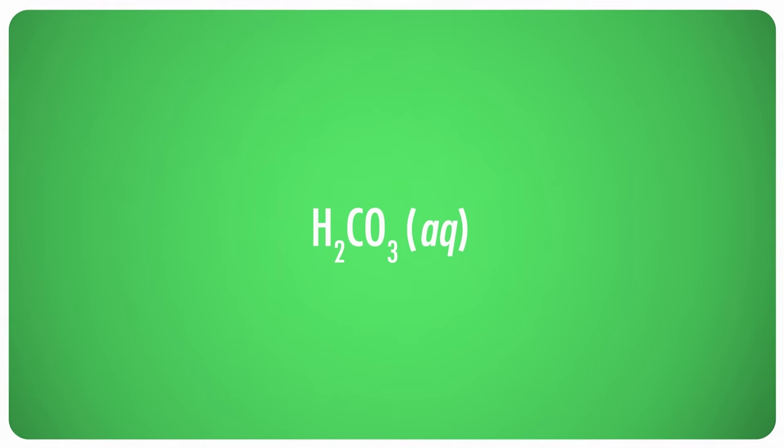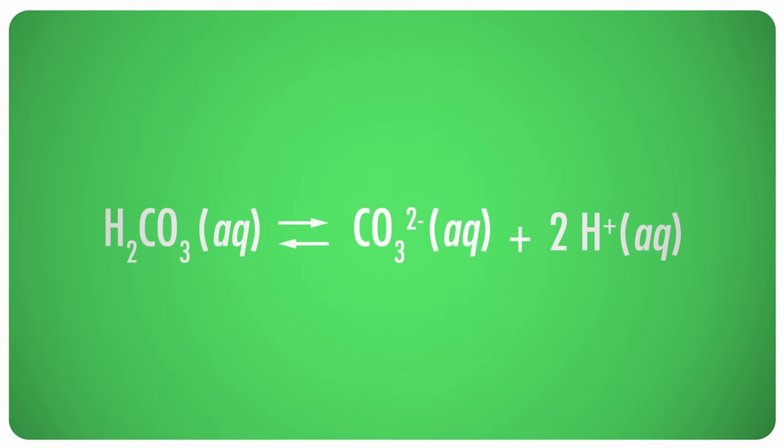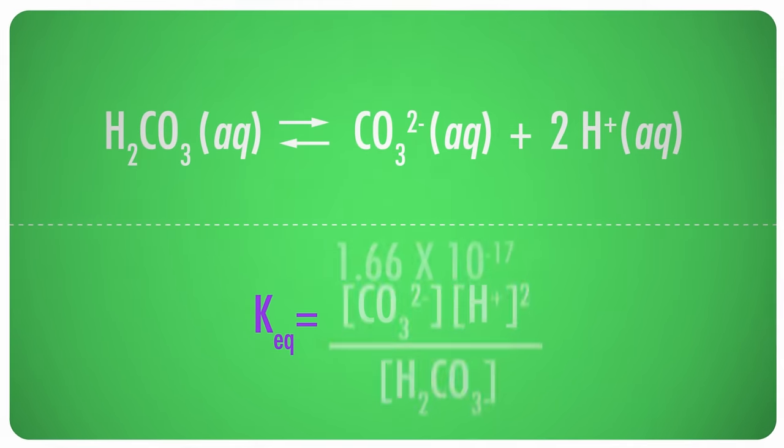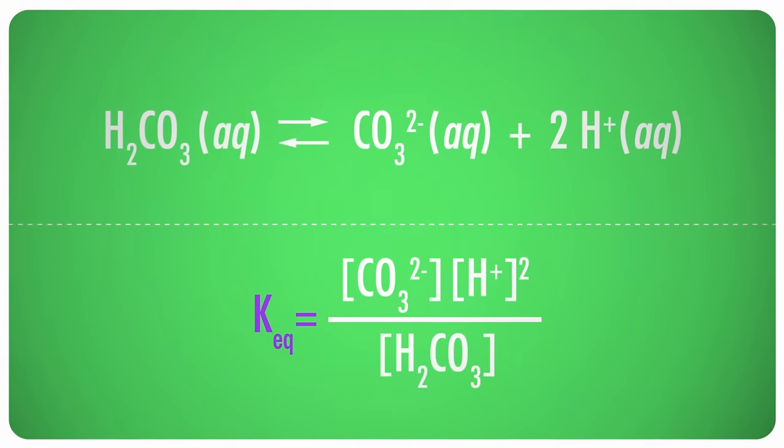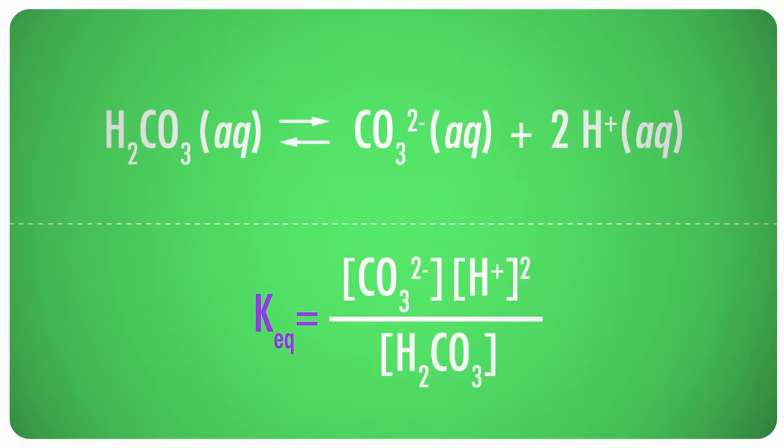Fortunately for us, chemists have already figured out the equilibrium constants for most common reactions. Carbonic acid, for instance, which is basically just carbon dioxide dissolved in water, dissociates to form carbonate ions and hydrogen ions. You'll see this reaction again later, when we talk in depth about carbon and the planet's carbon cycles. More importantly right now, the reaction is perfectly reversible, with an equilibrium constant of 1.66 times 10 to the negative 17th. For this reaction, KEQ equals the product of the molar concentration of the carbonate ion and the molar concentration of the hydrogen ion, which is squared because hydrogen's coefficient in the balanced equation is 2, all divided by the molar concentration of carbonic acid.